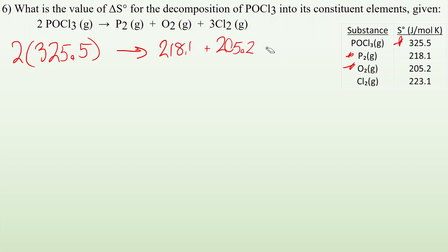And I have three moles of Cl2. So three times whatever Cl2 was, 223.1. I do the math. The sum of all of this is 1092.6.